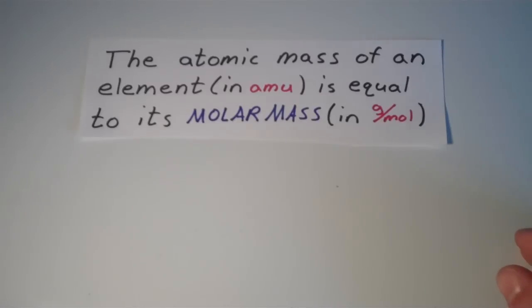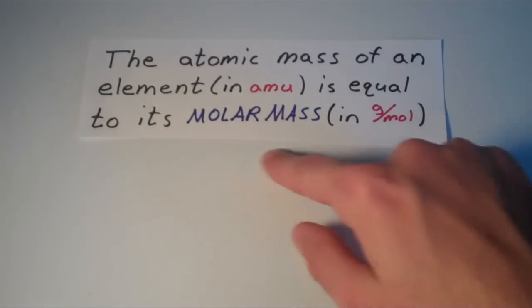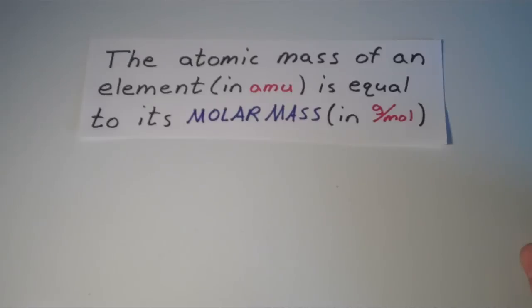So the main tool that's going to help us do this is the fact that the atomic mass of an element in atomic mass units, or AMU, is equal to that element's molar mass, which is in grams per mole. So the molar mass is simply the mass that one mole of the element weighs.